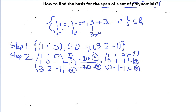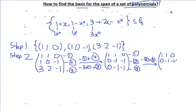Now we want to eliminate the entry below minus 1 in the second column, so we add minus 1 times row 2 to row 3. The first row stays the same, the second row stays [0, -1, -1]. For the third row: 0, and minus 1 times minus 1 plus minus 1 equals 0, and similarly the last entry becomes 0. So the system is now in row echelon form — step 3 is done.